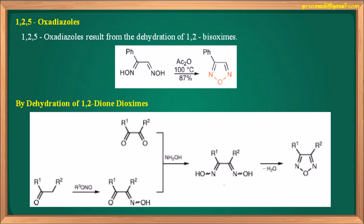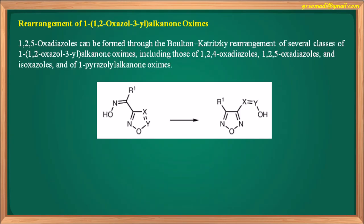1,2,5-Oxadiazoles result from the dehydration of 1,2-bis-oximes and by dehydration of 1,2-dione-dioximes. 1,2,5-Oxadiazoles can also be prepared by rearrangement of 1,2-oxazol-3-yl-alkanone oximes. This is the Bolton-Kartisky rearrangement, which includes 1,2,4-oxadiazoles, 1,2,5-oxadiazoles, isoxazoles, and pyrazol-1-yl-alkanone oximes. Another method is dehydration of alpha-dioximes using NH2OH.